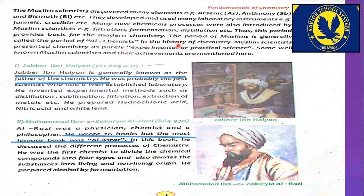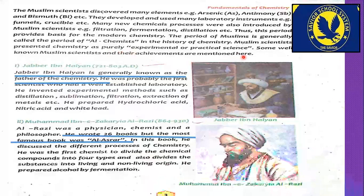The period of Muslims is generally called the period of alchemists in the history of chemistry. Muslim scientists presented chemistry as a purely experimental or practical science. Some well-known Muslim scientists and their achievements are mentioned here — underline this line.